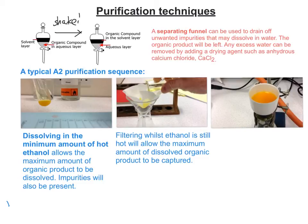A special type of fluted filter paper is used — it's halved, then quartered, then folded into eighths. That creates a better surface area for filtration and is a technique used in organic chemistry.